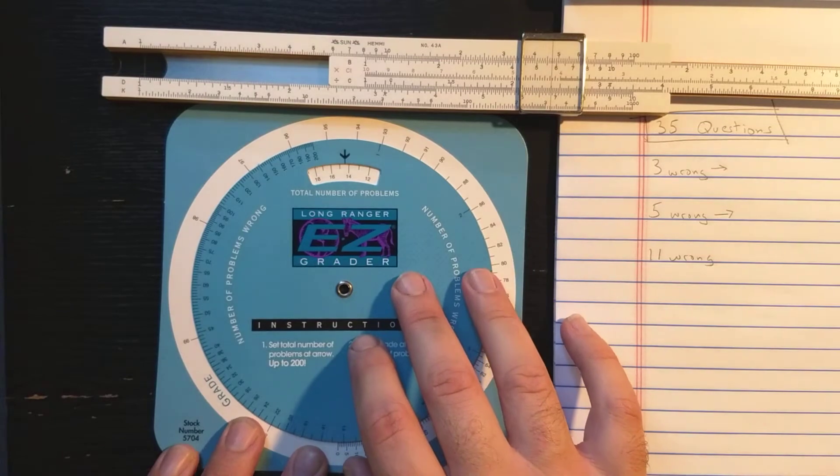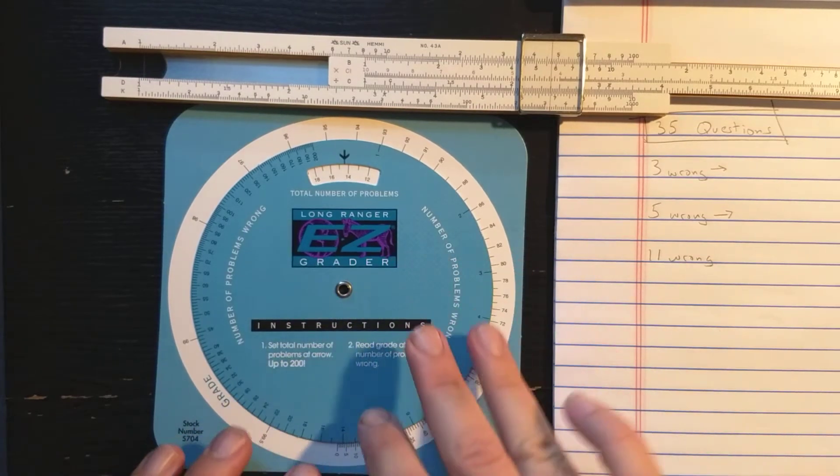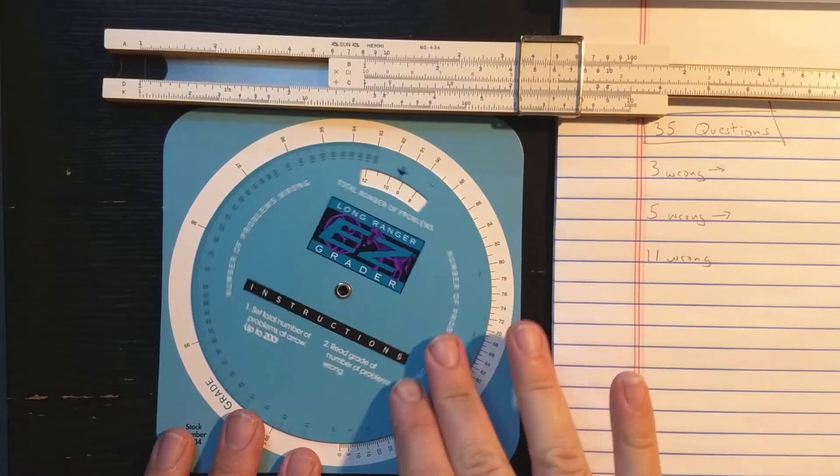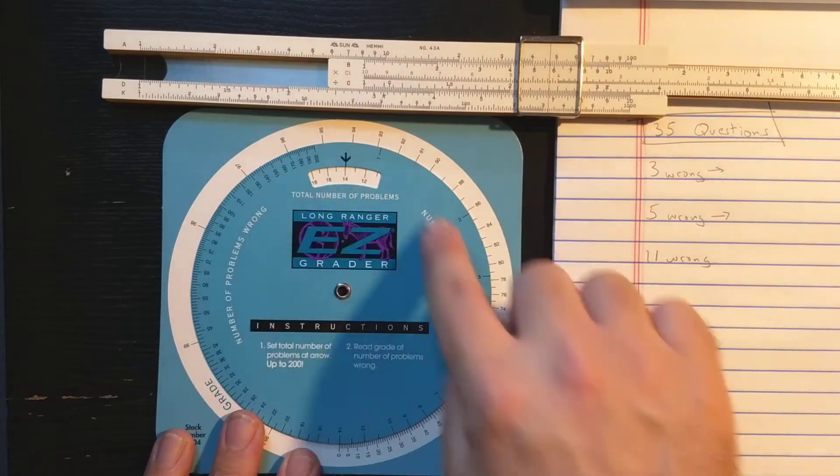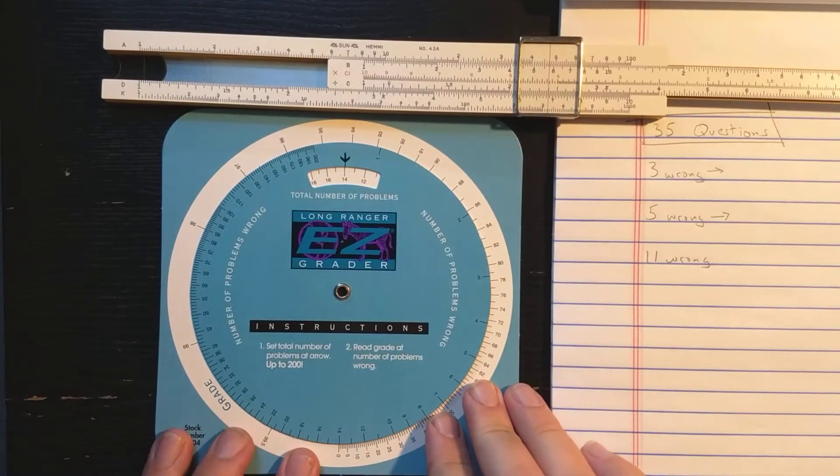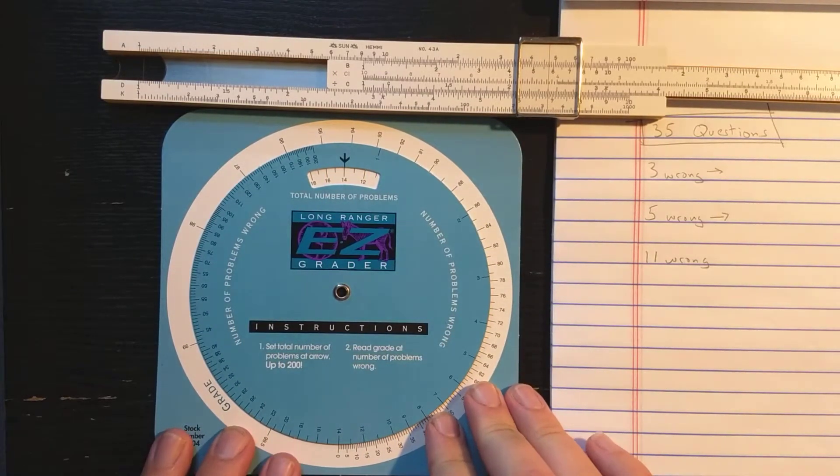The regular Easy Grader is like a slide chart. I don't have one here to show you the difference, but this circular Long Ranger Easy Grader, I think, could really be considered a special purpose slide roll.